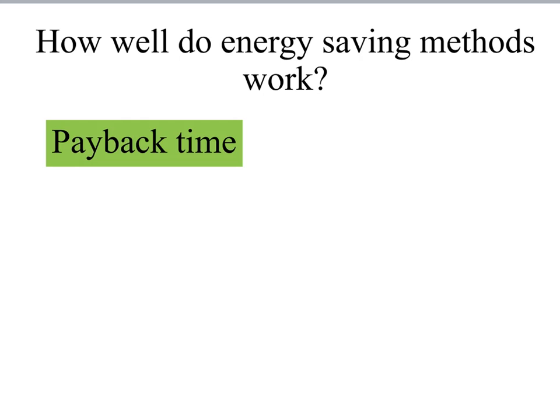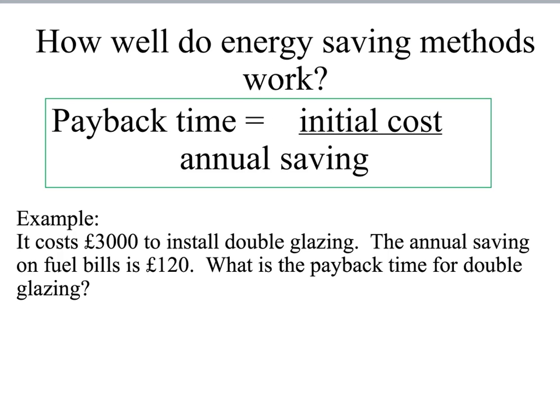There are many different things that we can do in the home to save energy, and we need to know which ones are worth doing and which ones aren't. One of the ways of assessing cost effectiveness is this idea of payback time. The payback time tells you how long it takes to make back the initial money that you spent on something, how long it takes to get that back in your savings. And you can see the equation here to work it out. Payback time is equal to the initial cost divided by the annual saving.